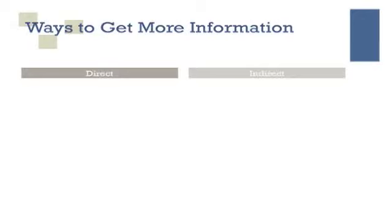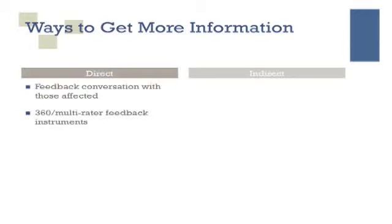Let's take a look at a couple of the ways you can get direct feedback. The first one is rather obvious: talk to the people who are affected by the situations or decisions that you make. A second one would be to complete an assessment, specifically a 360-degree multi-rater feedback instrument that would provide you information from your manager, your peers, and your direct reports.